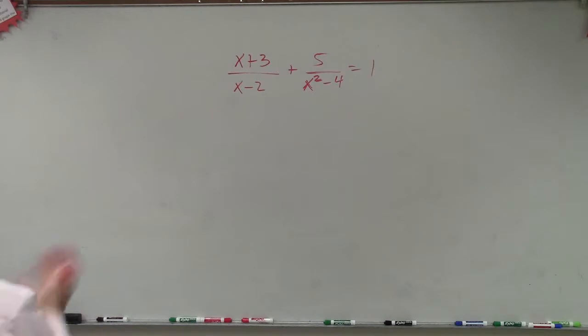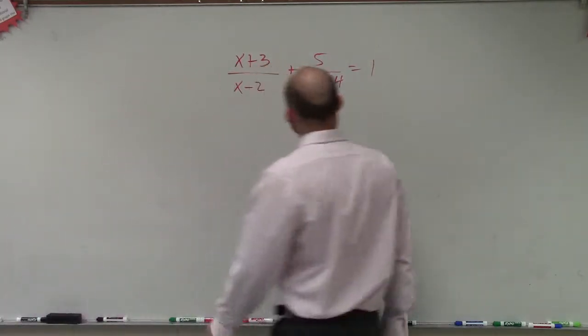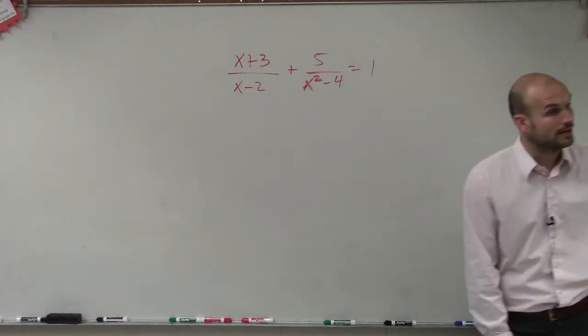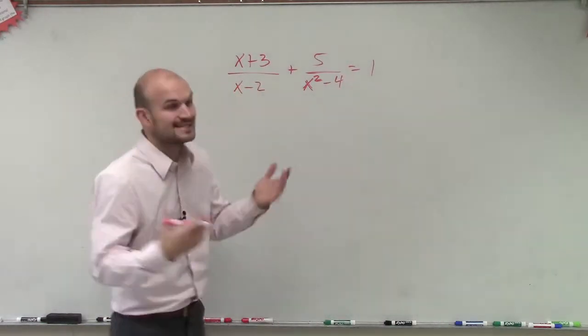Like this, what we have is x plus 3 divided by x minus 2 plus 5 divided by x squared minus 4 equals 1. And so what we're going to do for this one is this exact same thing.